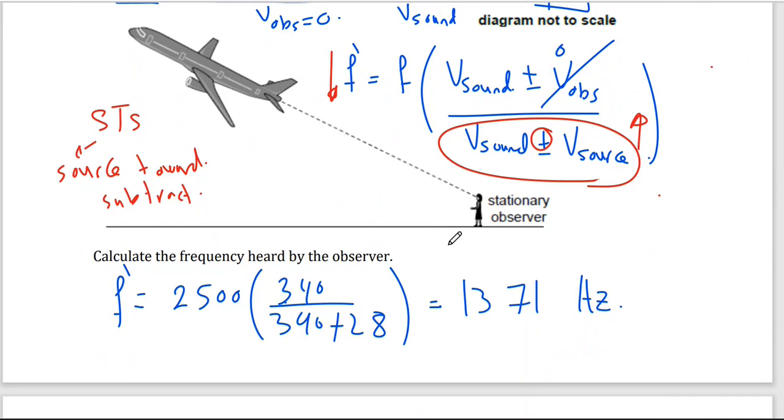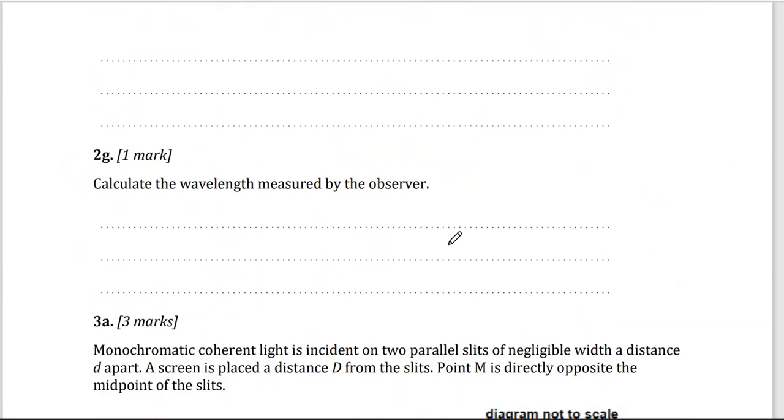Calculate the wavelength. This is the second one. Calculate the wavelength measured by the observer. So, lambda prime, the wavelength measured, will be the velocity divided by the observed frequency. Velocity of sound in air, 340 divided by the observed frequency we just calculated which is 1371. And you should get 0.24.